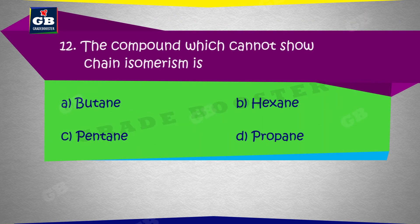The compound which cannot show chain isomerism: a) Butane, b) Hexane, c) Pentane, d) Propane.